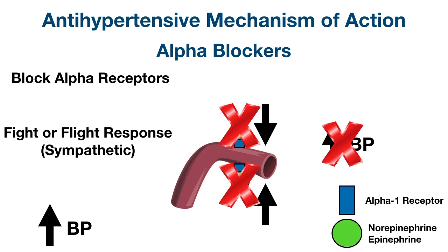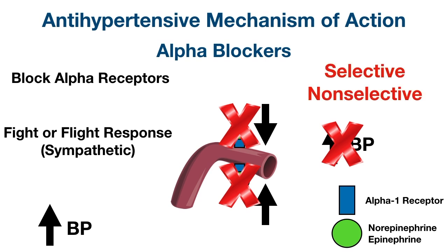There are different types of alpha blockers including selective and non-selective, depending on whether they bind to alpha-1 receptors, alpha-2 receptors, or both. This will be discussed more in the alpha antagonist video. If you want to learn more about the different types of alpha receptors, where they're located, and what their effects are, that can be found in the alpha receptor EZMed video linked below.